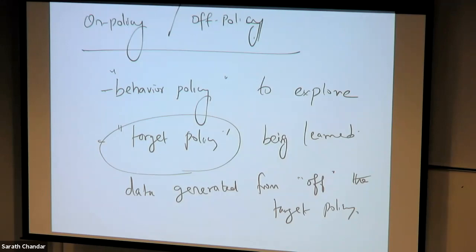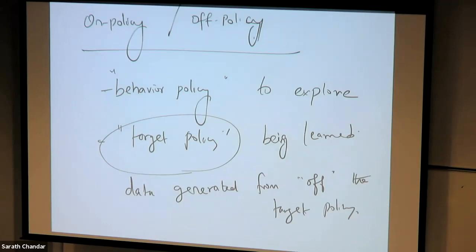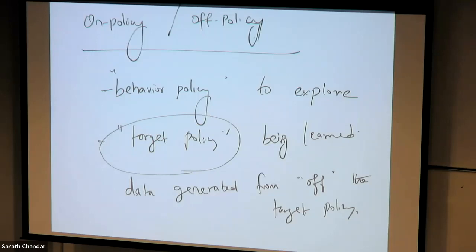Off-policy methods are more powerful and general than on-policy methods. On-policy methods are a special case: set the behavior policy equal to the target policy. Off-policy has many benefits: you can learn deterministic policies; the behavior policy need not be epsilon-greedy. For example, the behavior policy could be humans taking actions and generating data, or a heuristic system — you then use that data to learn the target policy.